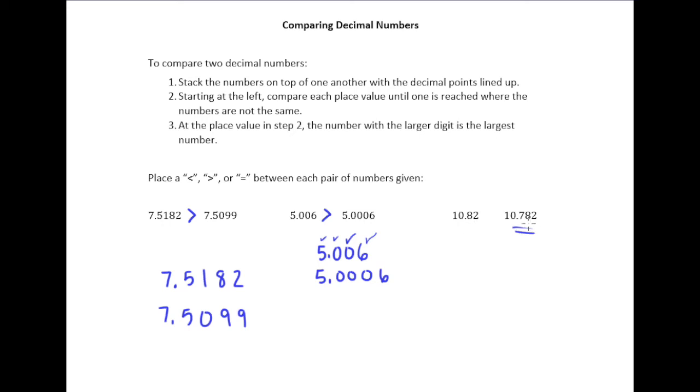But, in reality, if what we have here is 782 thousandths, right? And so if you wanted to say this as thousandths, you could say 10 and 820 thousandths.